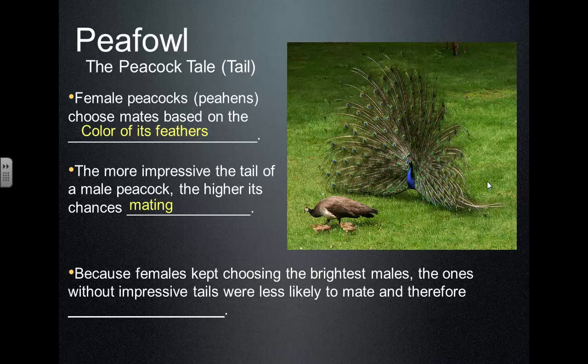Because females choose males with the brightest tails, what happens to the ones with small or boring tails? They don't die exactly — the tail doesn't help them fly or get food — but they won't reproduce. No females will choose them, so they don't pass on those genes for small tails to offspring. The males with super bright, showy tails attract females, mate and reproduce more often, leading over time to the species evolving to have brighter and brighter tails.